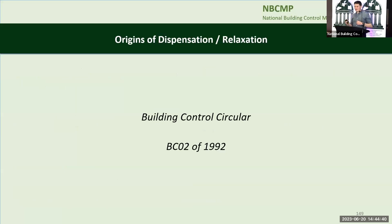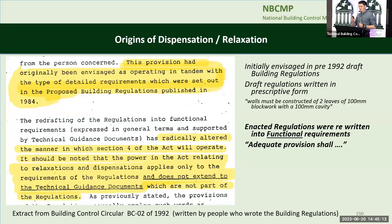The building regulations were published and implemented on the 1st of June 1992. Shortly after that, a building control circular was passed around to all the building control authorities. That circular was drafted by the same people who drafted the building regulations, so they knew what they were talking about. The MBCO have a copy — anyone who wants it can reach out or I can email it afterwards. It's a fantastic document, and I'll quickly cover the dispensations and relaxation section of it.